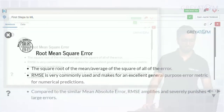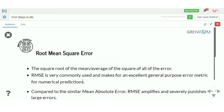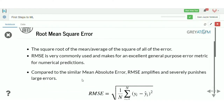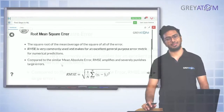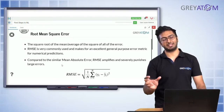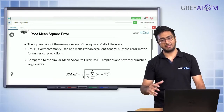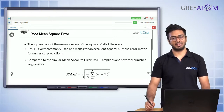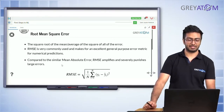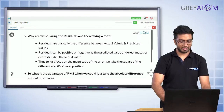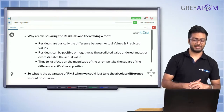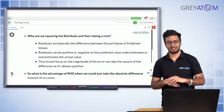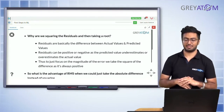Root mean square error is the same concept where instead of taking the squared error as-is, we take the average of the squared error and then take a root over it. Mean squared error is where we take the mean of the squared errors, and root mean square error is where we take the root of the mean of the squared errors.